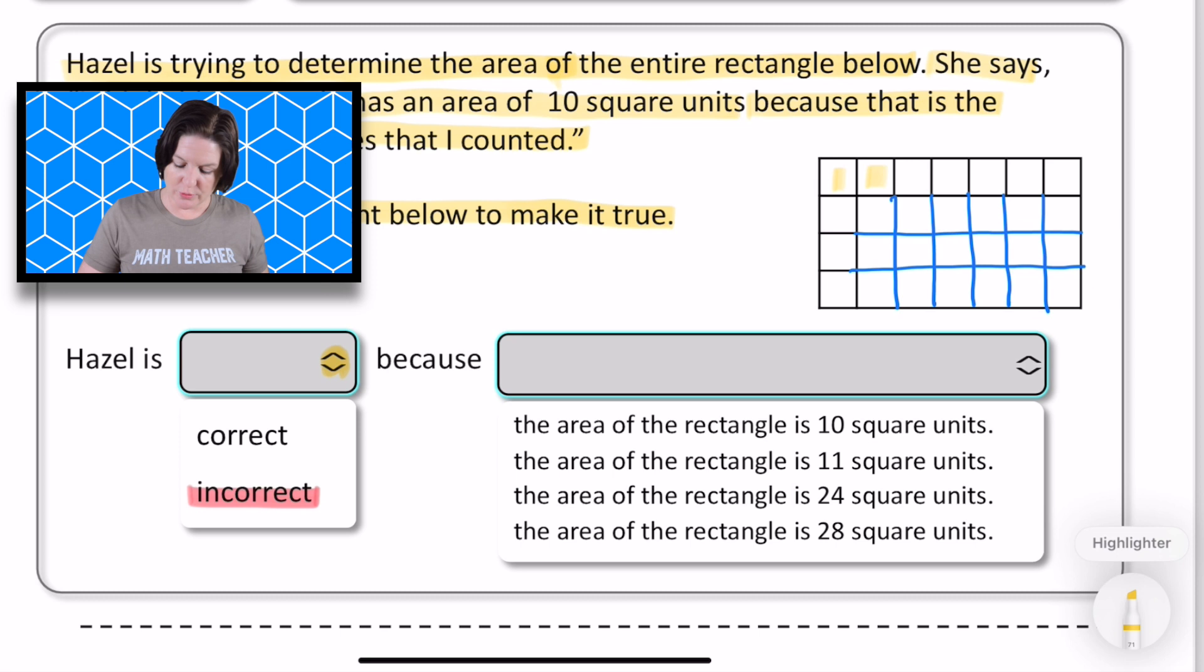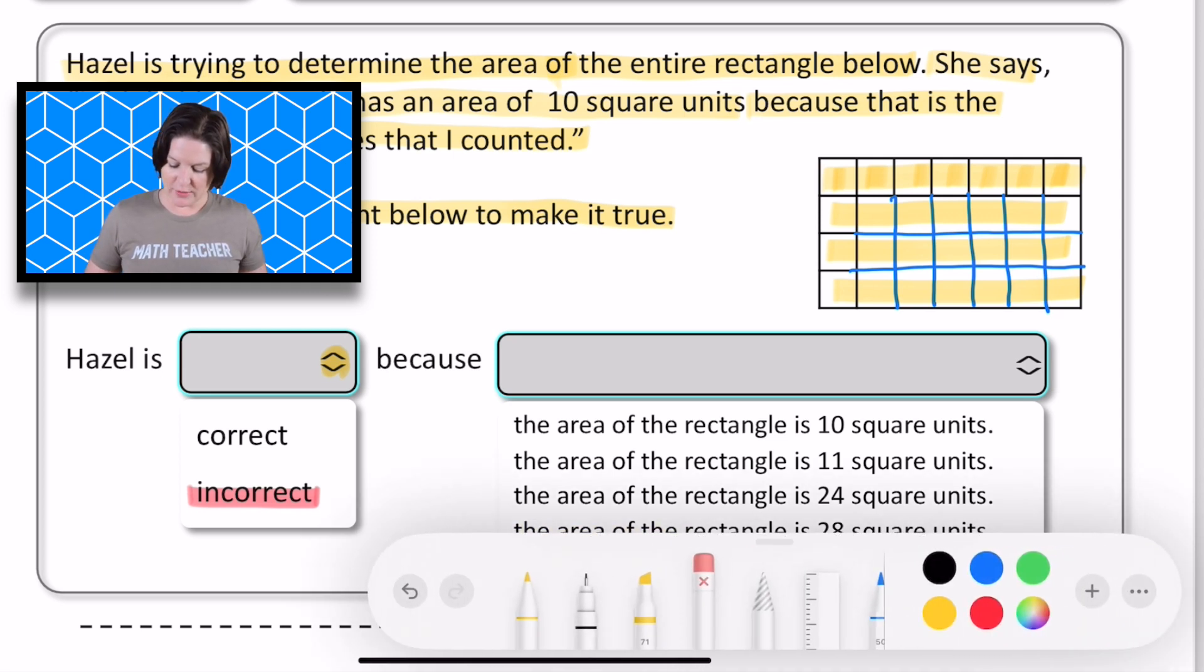So we have one, two, three, four, five, six, seven in each row. So this would be seven, 14, 21, and 28. So the correct answer should be that the area of the rectangle is 28 square units.